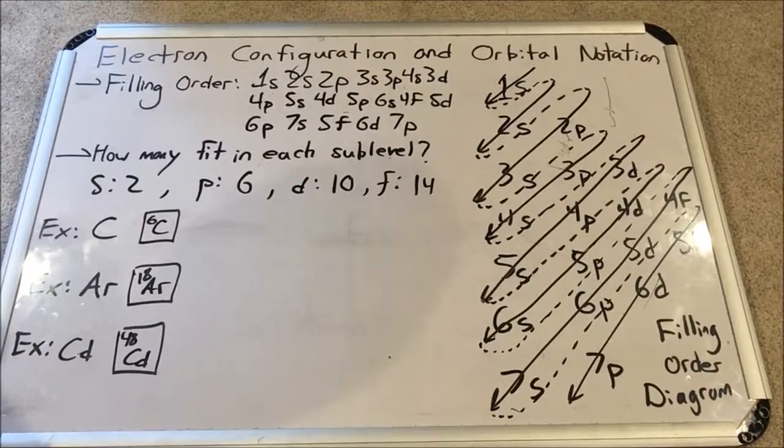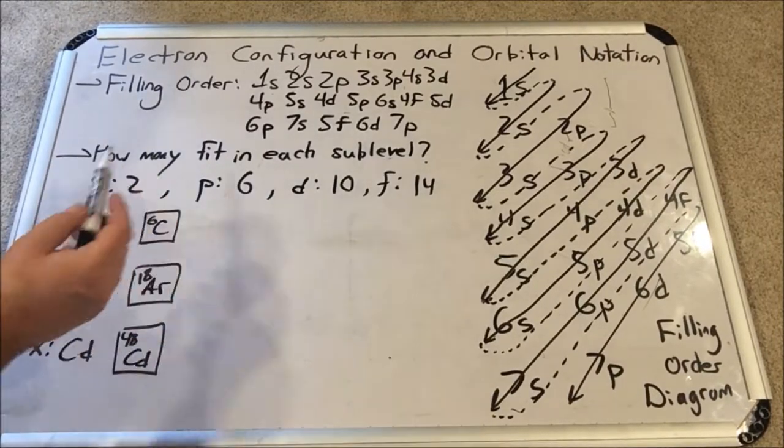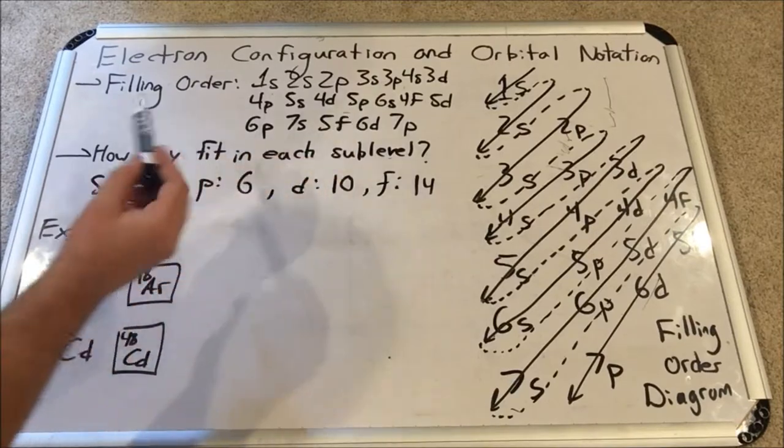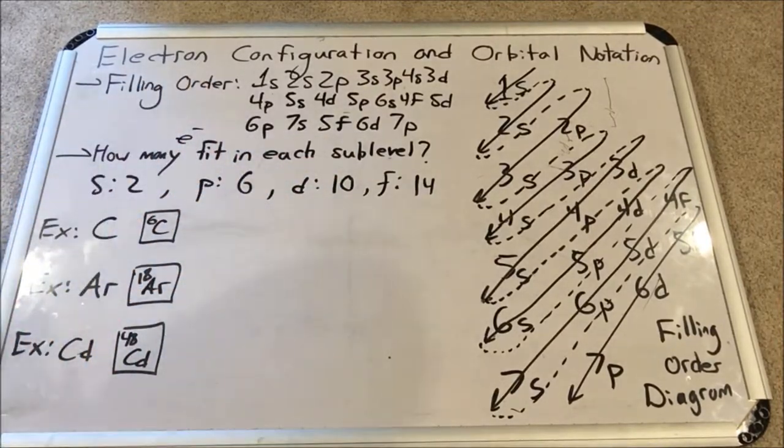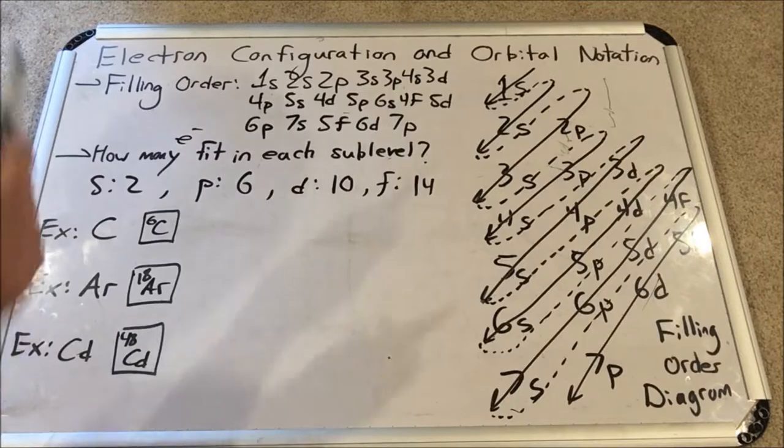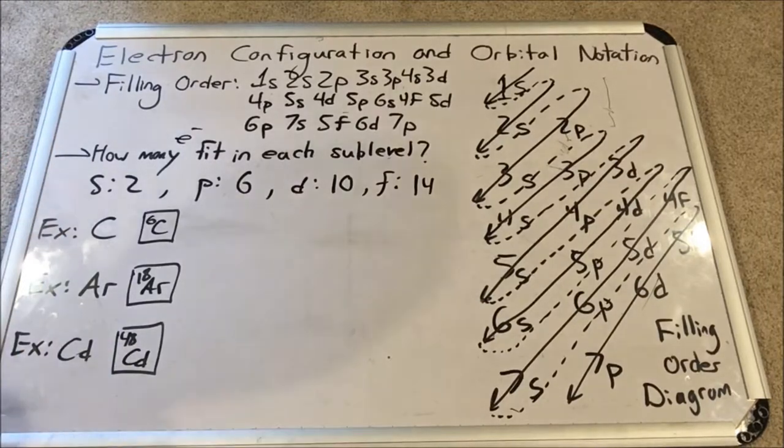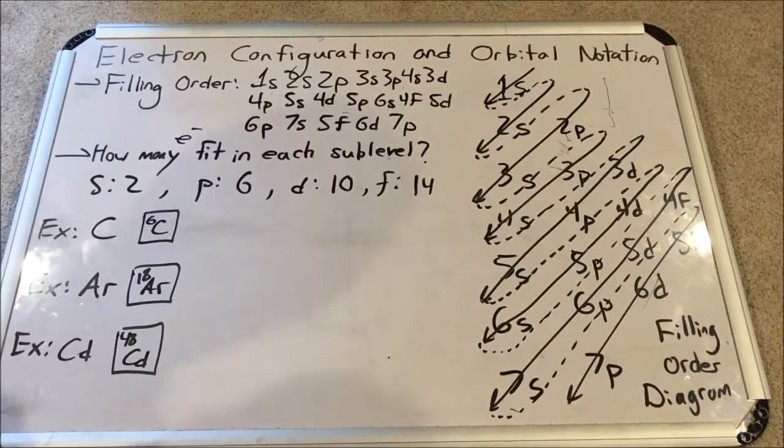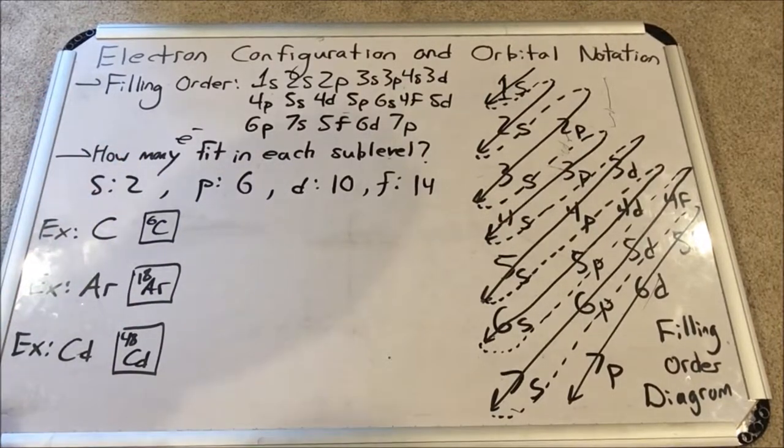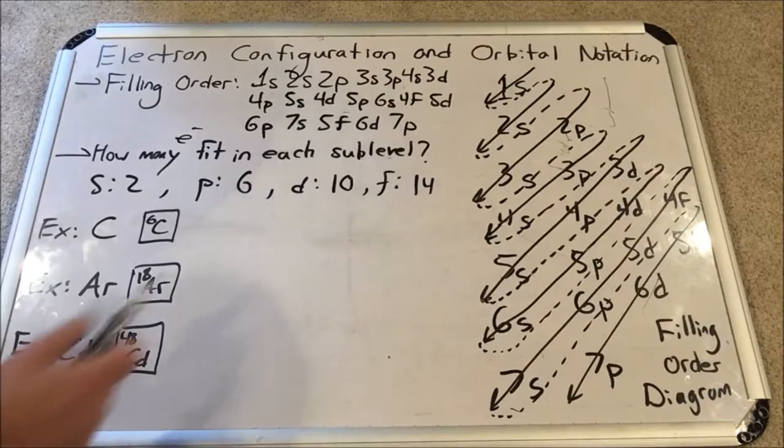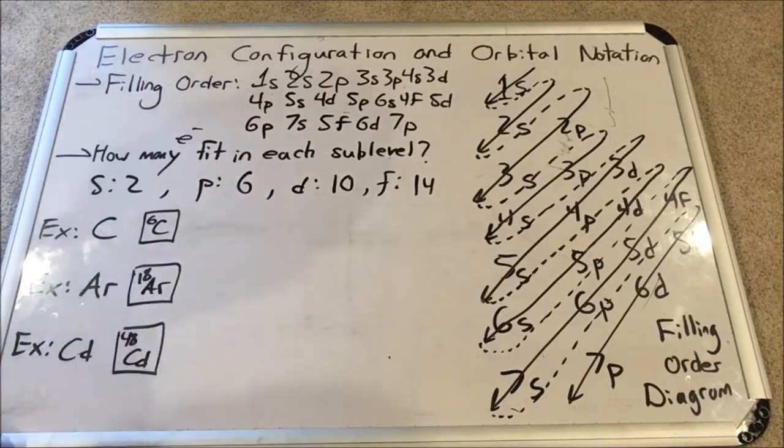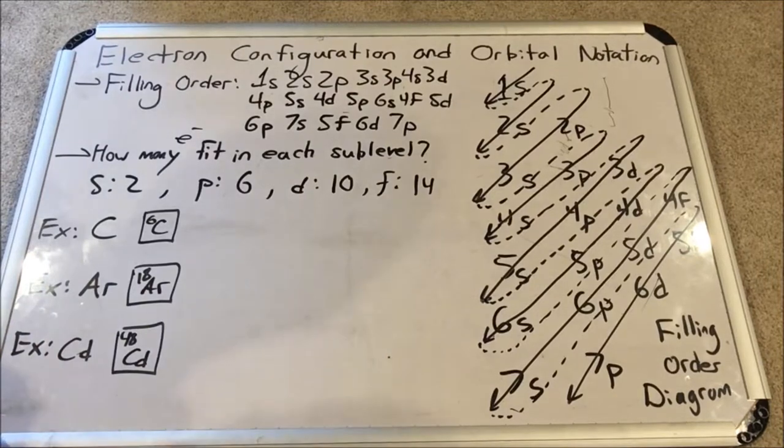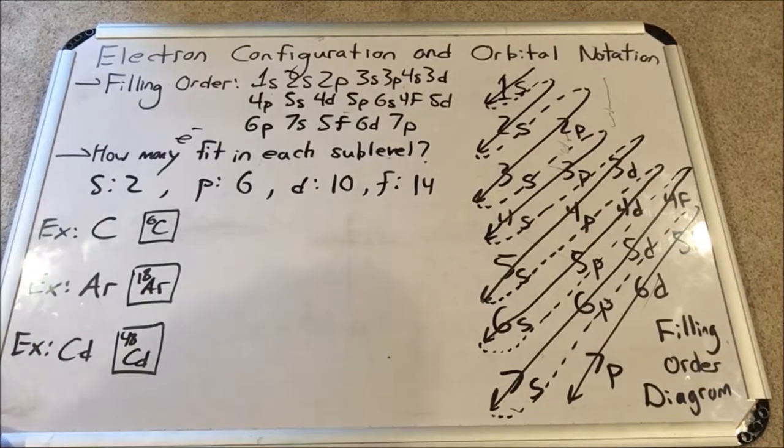We will also need to know the following thing: how many electrons are fitting in each sublevel? S sublevel is the smallest and it has 2 spots for electrons. P is the next largest, it has 6 spots for electrons. D, next in line, has 10 spots for electrons. And F, the last one in line, has 14 spots for electrons.